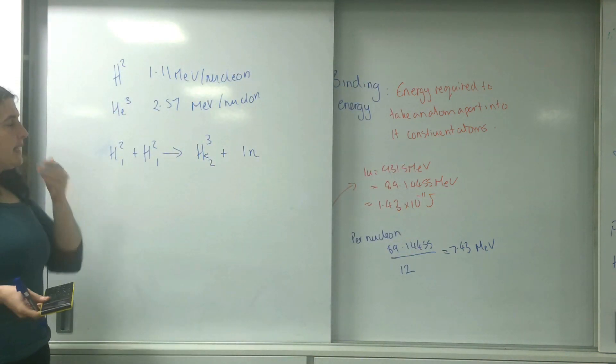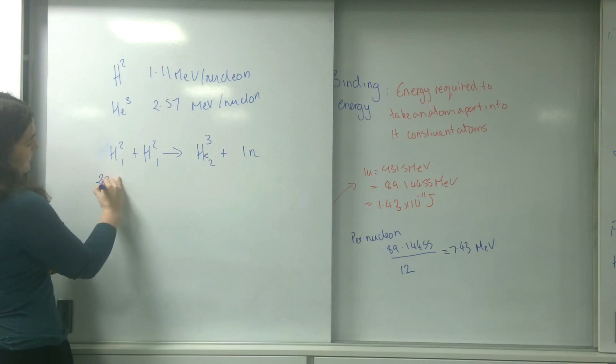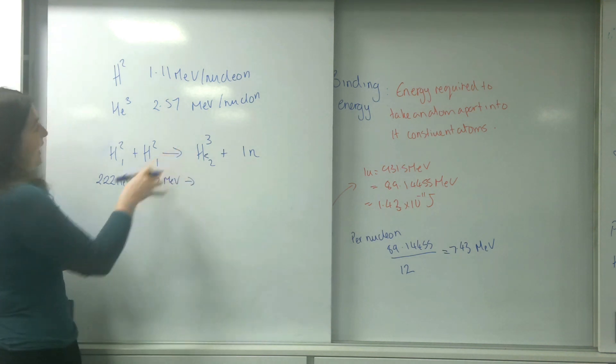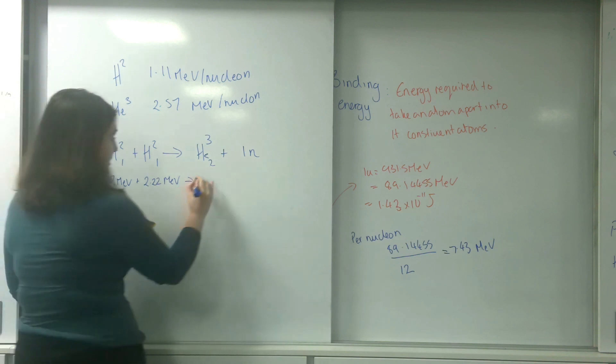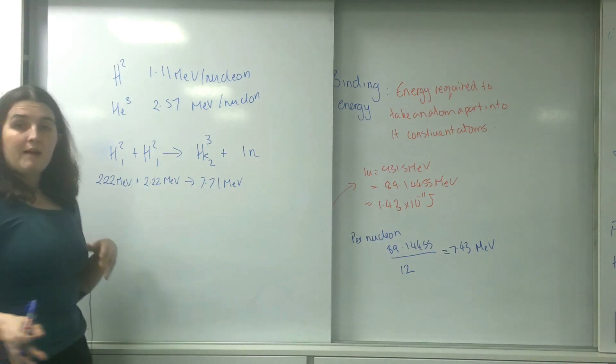How I do these is kind of like the mass deficit. I will write underneath the equation. This is per nucleon and hydrogen or deuterium has two of these, so I need to times this by two. That's 2.2 MeV. Here again would be 2.2 MeV. Helium is going to be 2.57 times 3, which is 7.71 MeV.